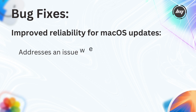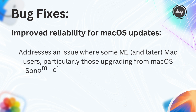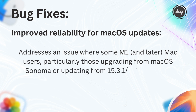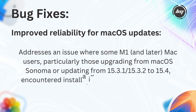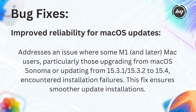The first improvement is improved reliability for macOS updates, which addresses an issue where some M1, and later, Mac users — particularly those upgrading from macOS Sonoma or updating from 15.3.1/15.3.2 to 15.4 — encountered installation failures. This fix ensures smoother update installations.